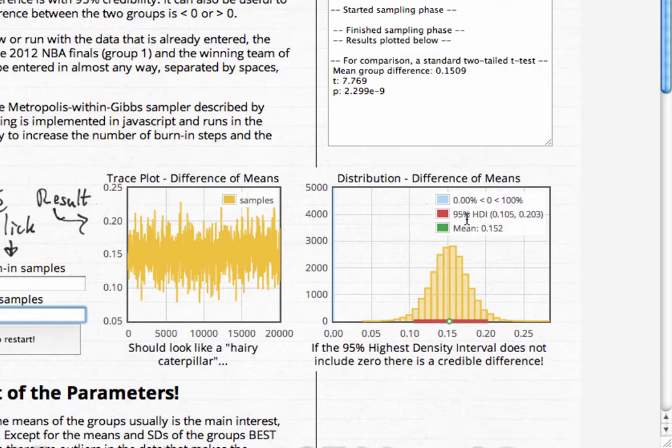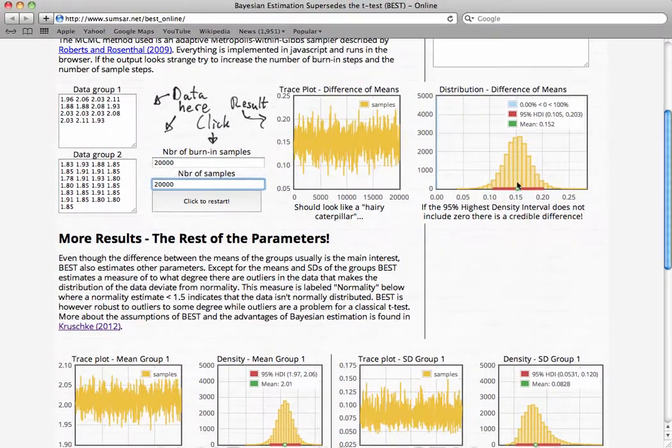And lastly, we have this 95% highest density interval, or HDI, which covers 95% of the most credible parameter values. Notice here the actual credible difference between these groups is about 0.15. We can extract any sort of mean or mode, or any measure of central tendency to describe this distribution, and we can also report this HDI.